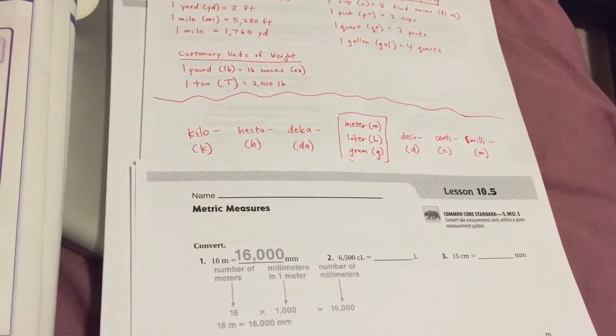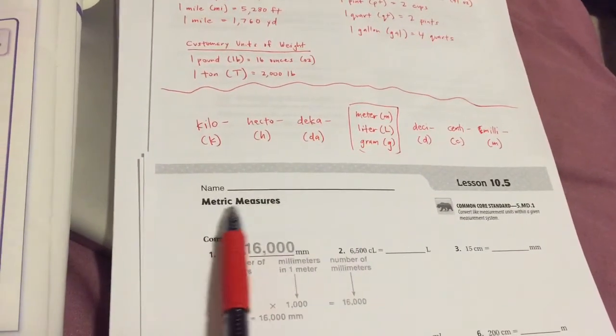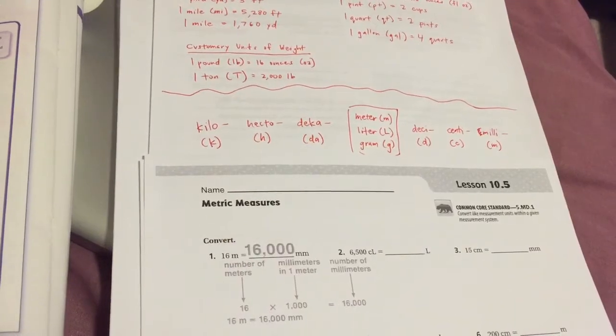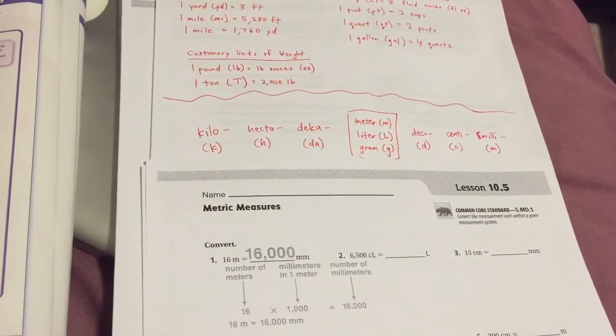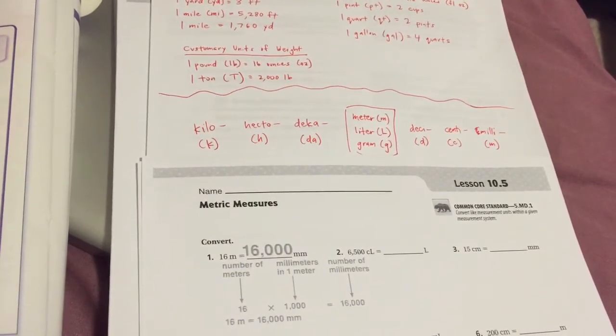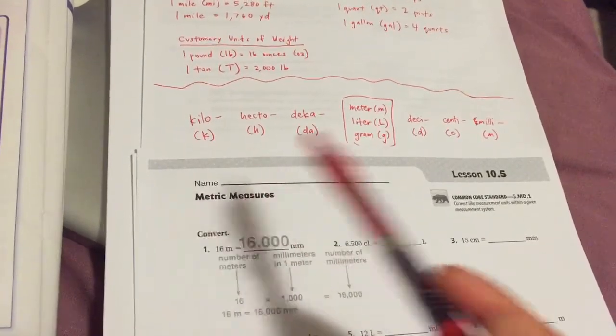Okay, now we're going to be starting Chapter 10, Lesson 5, Metric Measures. The main difference between this lesson and the ones prior is that we're going to be working with base 10s.